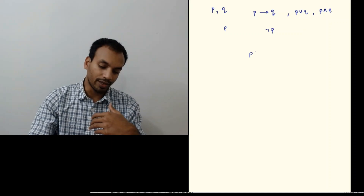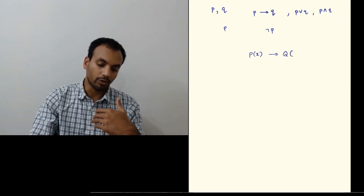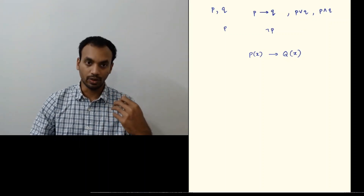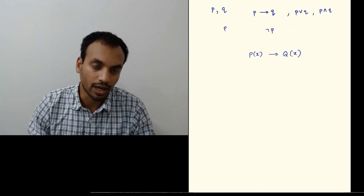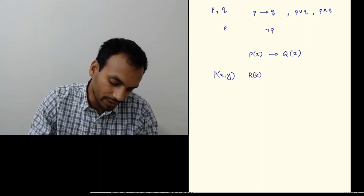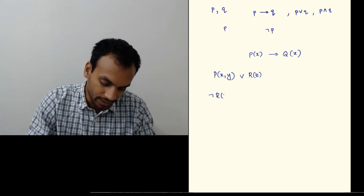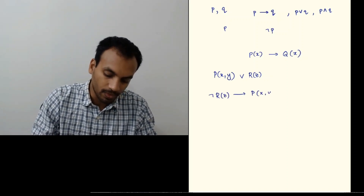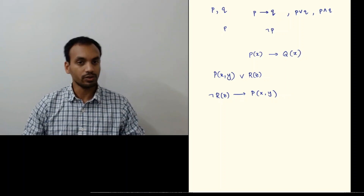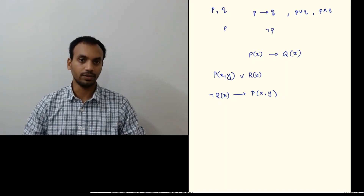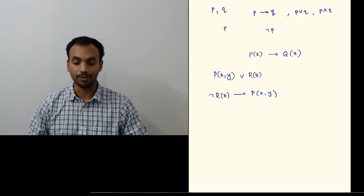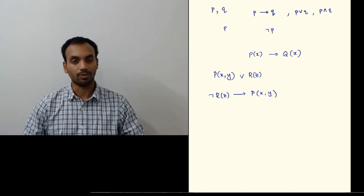So if you have P(X) and Q(X) you can talk about P(X) implies Q(X) as a predicate — if you put a particular value of X you get a proposition. Similarly, if you have P(X,Y) and R(Z) you can form P(X,Y) or R(Z), or negation of R(Z) implies P(X,Y), where X, Y, Z will have appropriate domains. We can also use all the laws of propositional logic to simplify and manipulate these compound predicates. Once you instantiate X, Y, Z you get compound propositions.